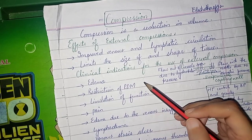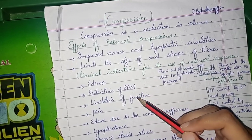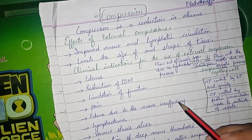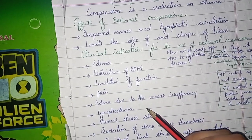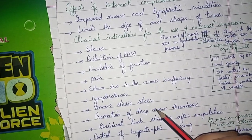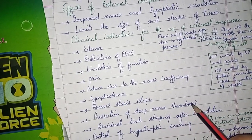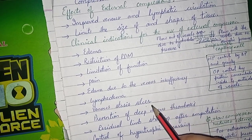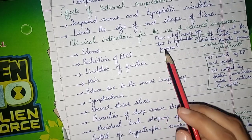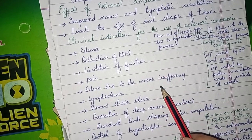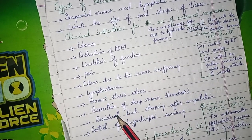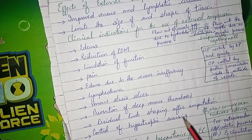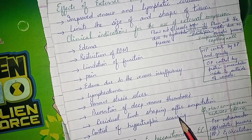Indications — conditions in which we can use external compression — include: edema, restriction of range of motion, limitation of function, pain, edema due to venous insufficiency, lymphedema, venous stasis ulcer, and prevention of deep venous thrombosis (DVT). However, if DVT has already occurred, we do not use compression devices.